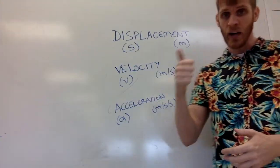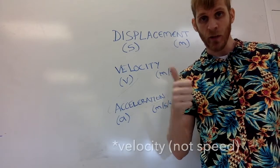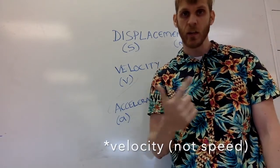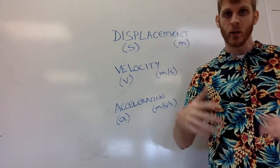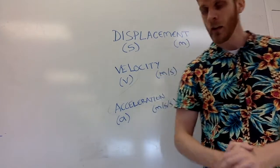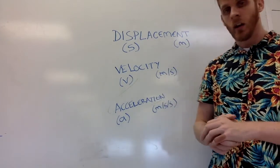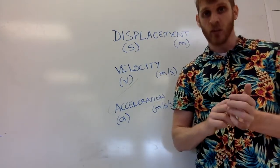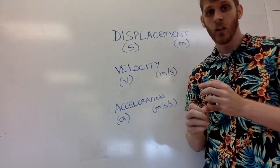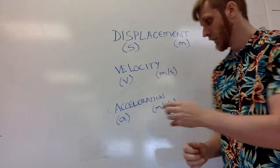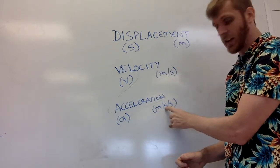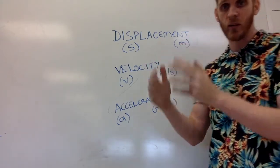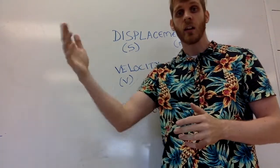You can have a positive acceleration if you're picking up speed, or a negative acceleration if you're decreasing speed — a lot of times we call that deceleration. Acceleration is the rate of change of velocity, so acceleration A is your meters per second divided by seconds — figuring out how many meters per second you're traveling each second.